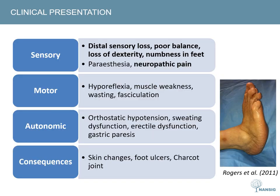How do patients with a polyneuropathy present? As a polyneuropathy is a disorder of the peripheral nerves, symptoms can be grouped into those arising from damage to the sensory, motor and autonomic nerves. Starting with sensory symptoms, these can include sensory loss in any of the modalities, which usually starts distally. I will talk more about the particular pattern of sensory loss on the next slide. Other common symptoms include poor balance, loss of dexterity and numbness in the feet.